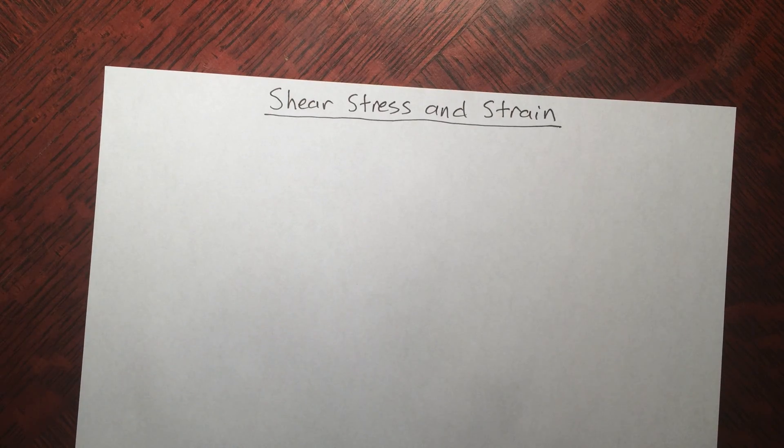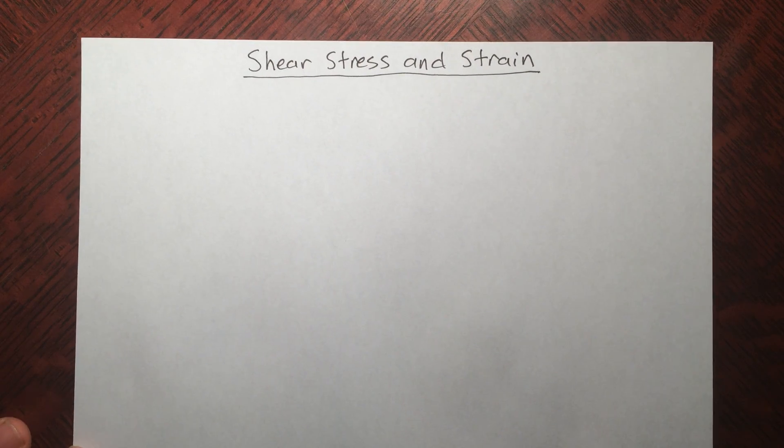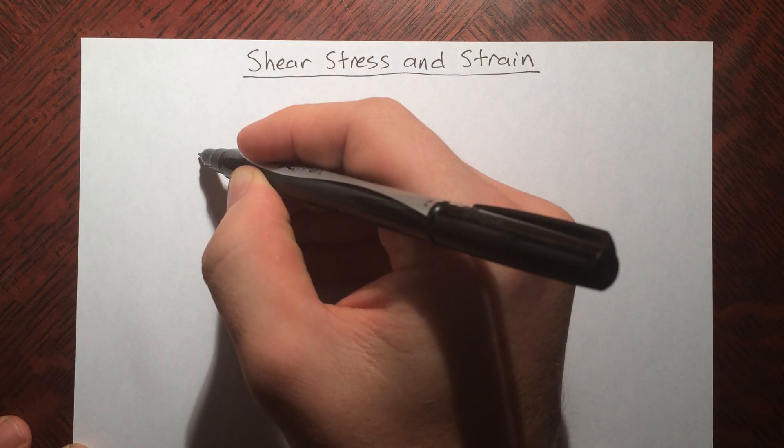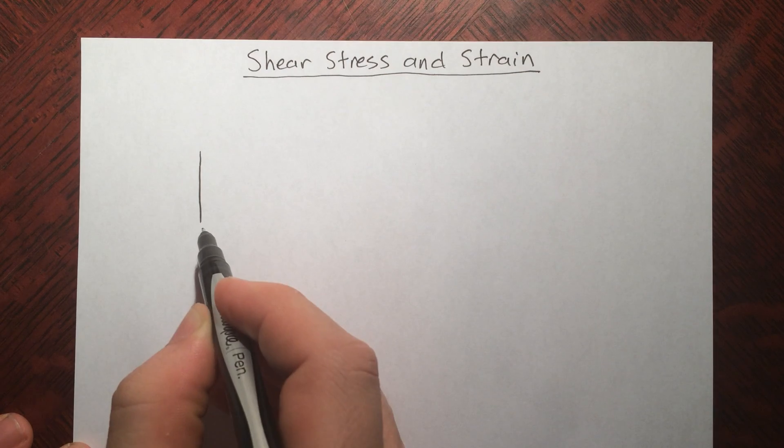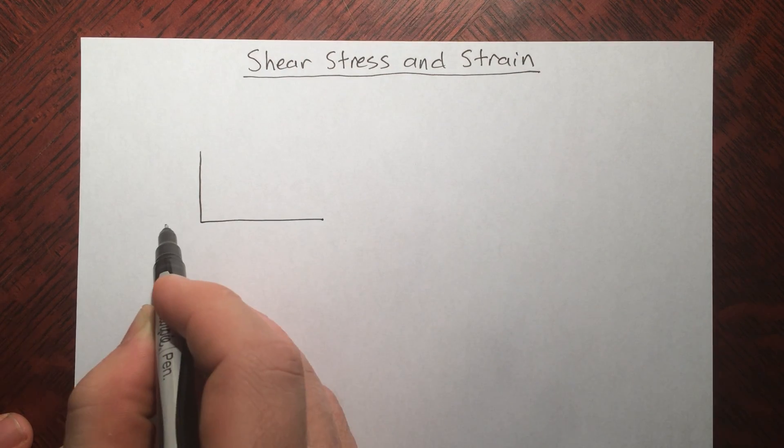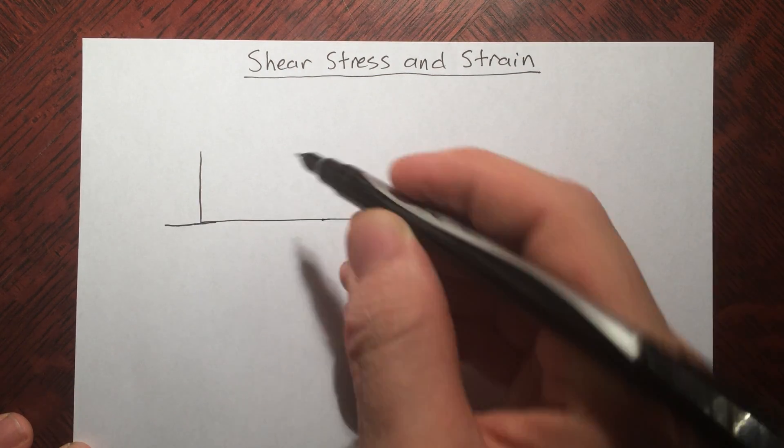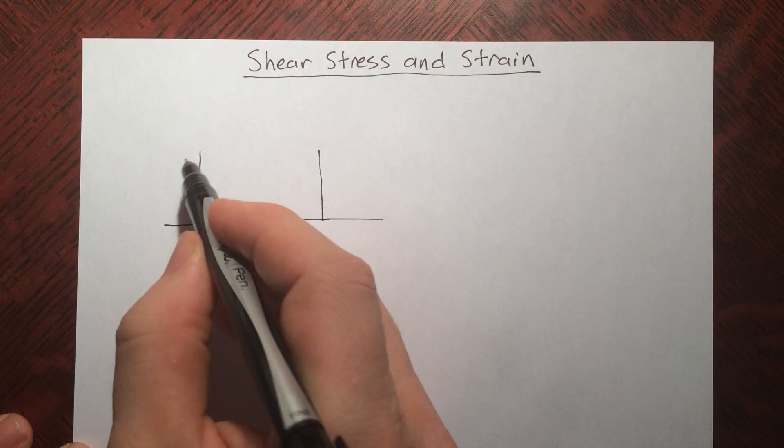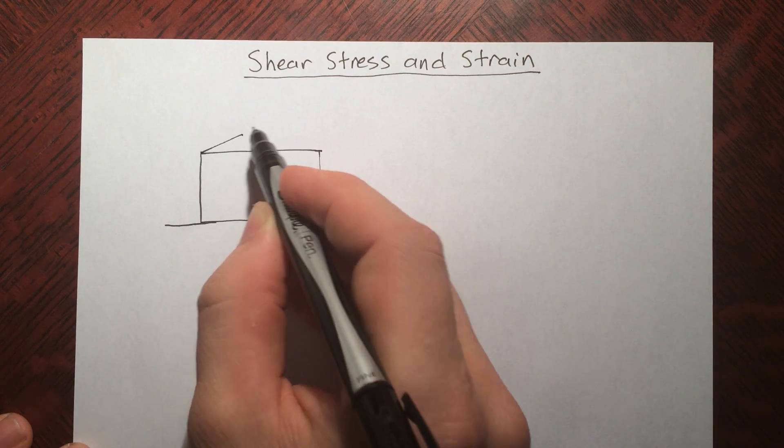So let's get down a diagram so we can get some mathematical definitions of this. A box should do well for our purposes. All right, let's get it 3D.